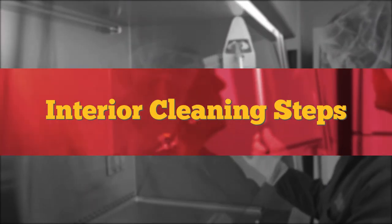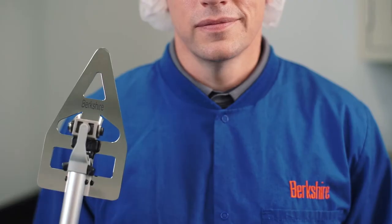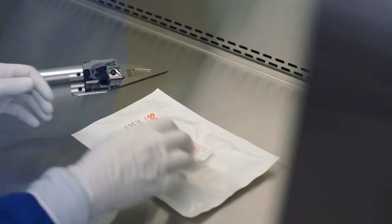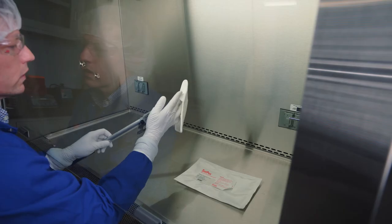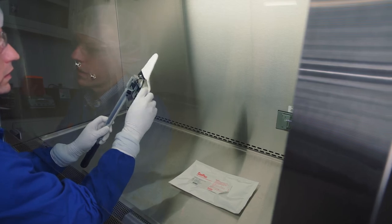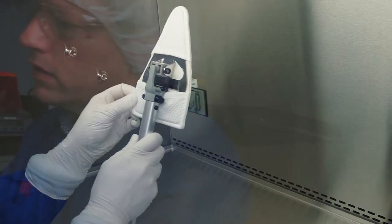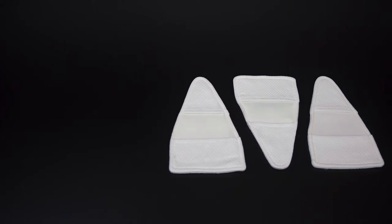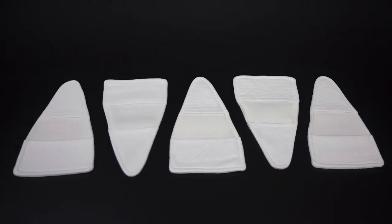Interior cleaning steps. Use the autoclavable EasyClean 360 tool and a sterile padded cover pre-saturated with isopropyl alcohol, IPA, and deionized water. Use one padded cover per interior surface, at least five covers, in the following recommended order.